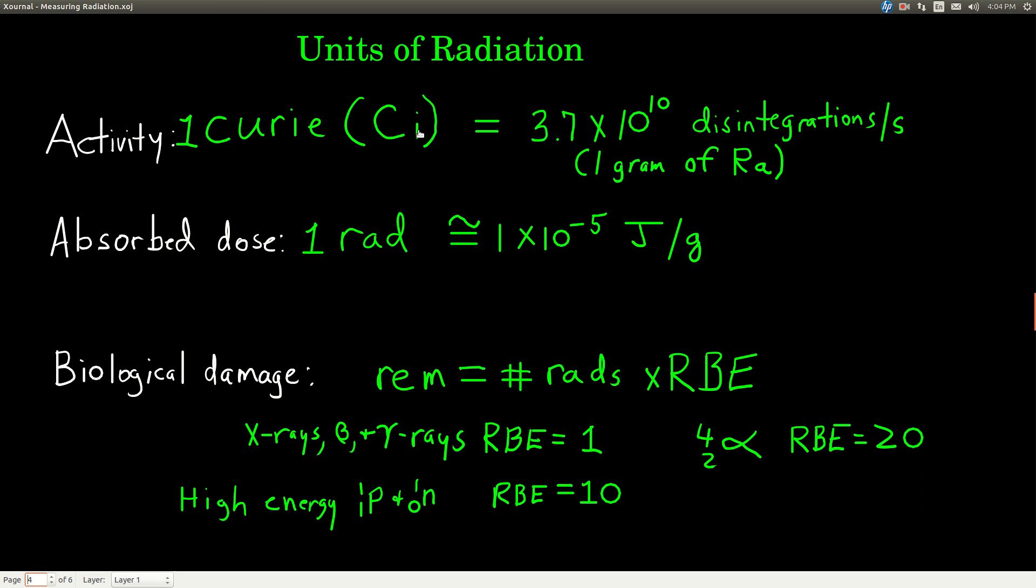The symbol is a capital C, lowercase i. So one curie is equal to 3.7 times 10 to the 10th disintegrations per second, or decays per second. In other words, that many isotopes decaying per second is one curie. And that number corresponds to the disintegration rate of one gram of radium.